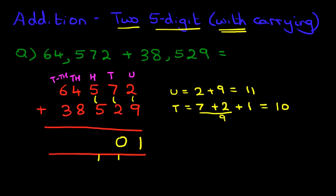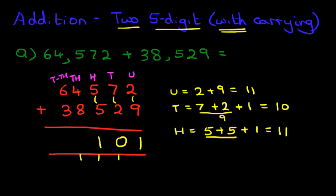Now we are going to add the hundreds. We have five plus five, plus the one we have carried over. Five plus five — we know that from our number bonds, five and five is ten, plus the one is eleven. So let's write this down. We have one and one.